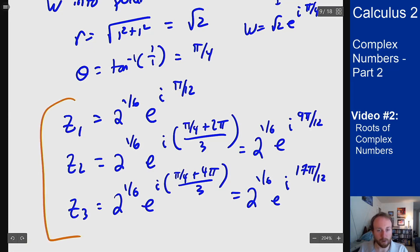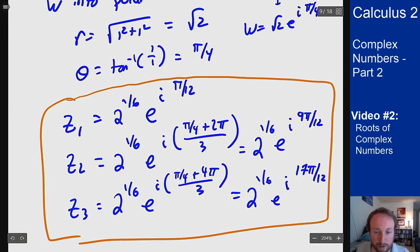If I tried to find a fourth I'd end up adding 6 pi over 3 which would add 24 pi getting me to 25 pi over 12 but that's the exact same as pi over 12 because the angle rotates by 2 pi. So these are my three solutions that I would get for the cube roots of the complex number 1 plus i.